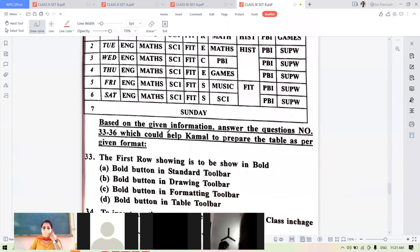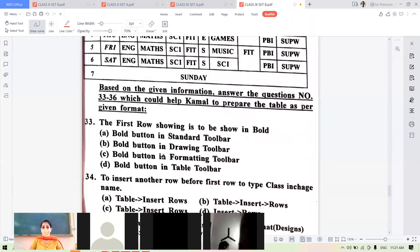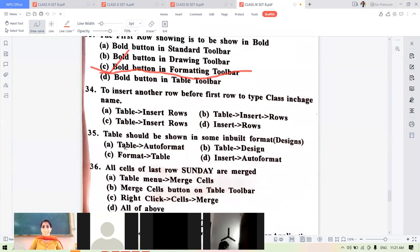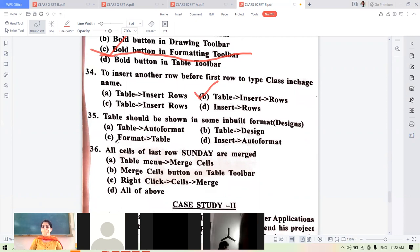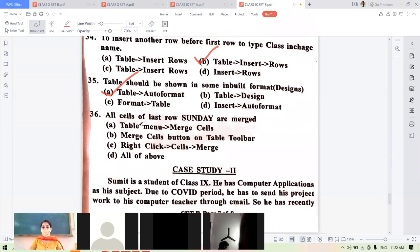Case study based on table. First row is to be in bold. Bold is on formatting toolbar. To insert another row before the first row, the class in charge will use table insert row. Table should be in inbuilt design: table auto format. All cells of last row should be merged. Table merge cells, merge cell on table toolbar, right-click and then merge. All options are correct.